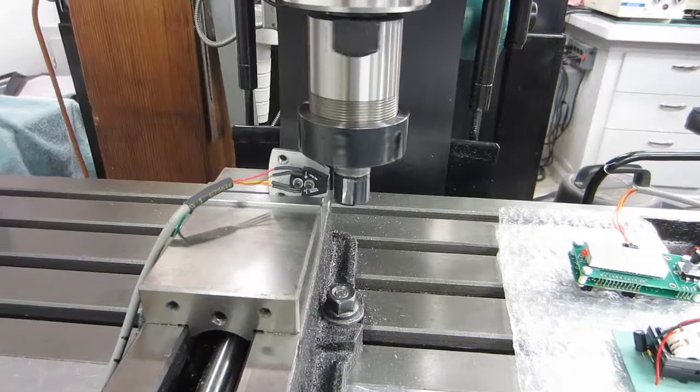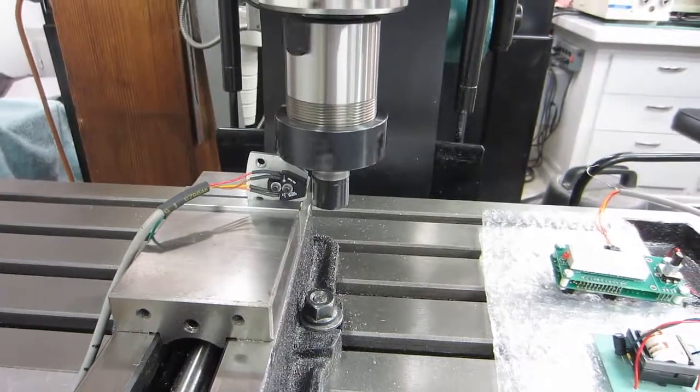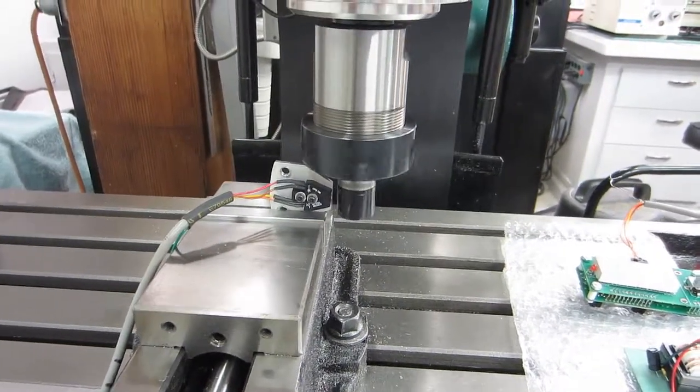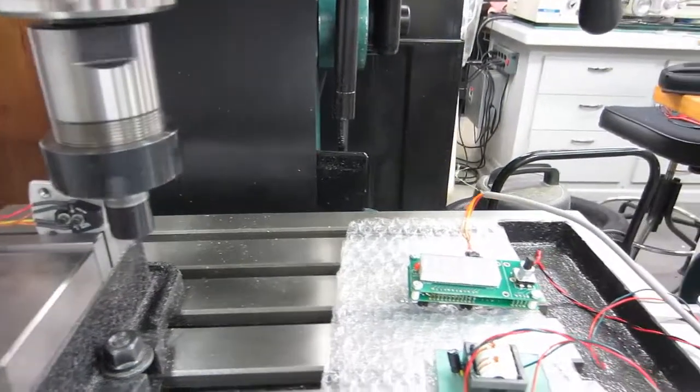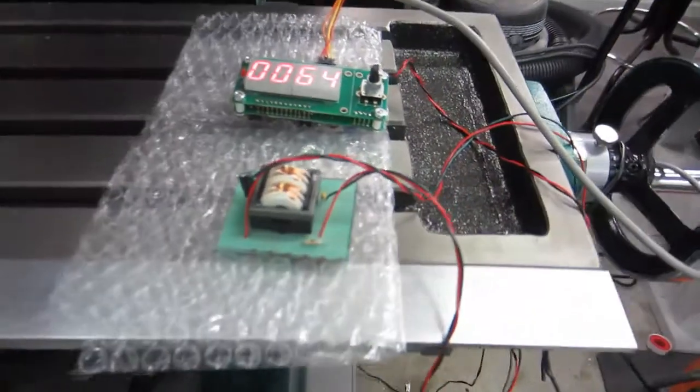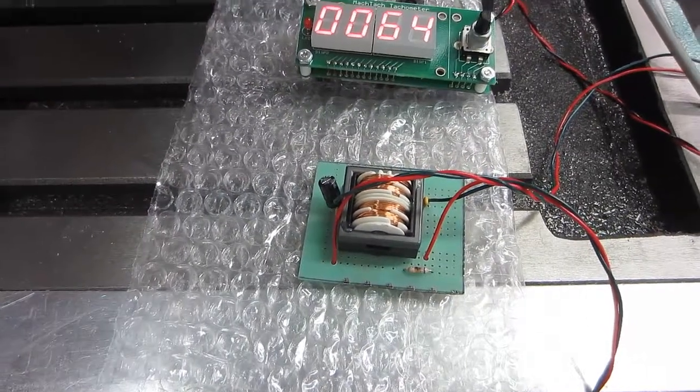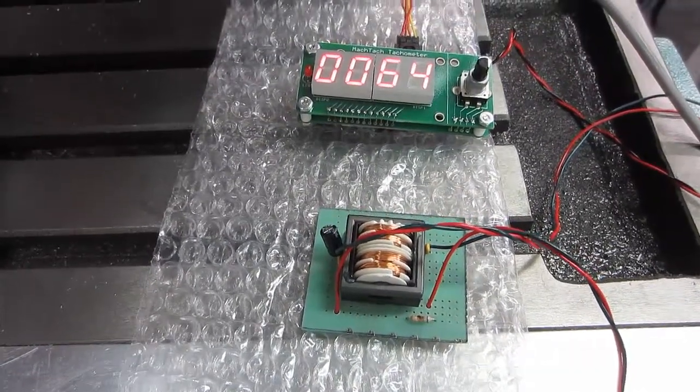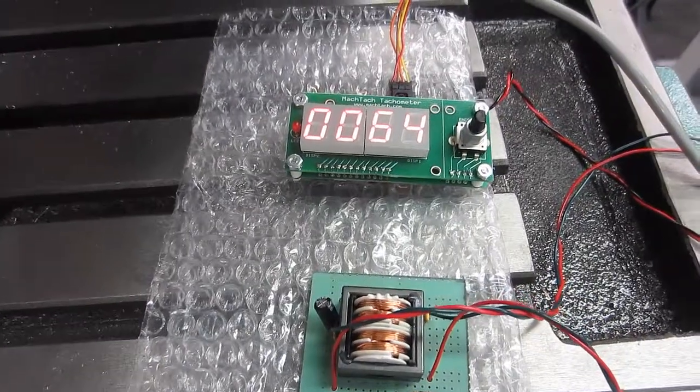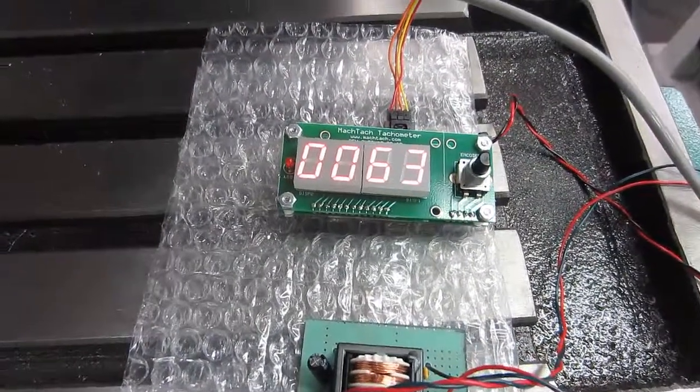So here we are again. Same setup. Single patch. IR sensor. This time we have a filter on this setup here. But I don't really think it's making any difference because on this particular machine it doesn't seem like the VFD noise is making much difference. And you can see again we have 64 RPMs.